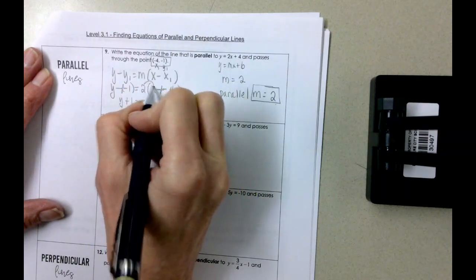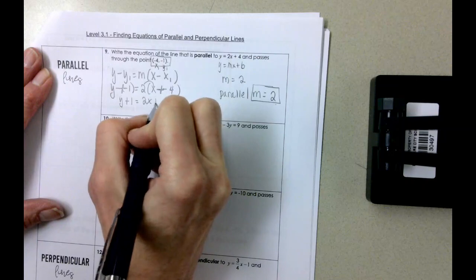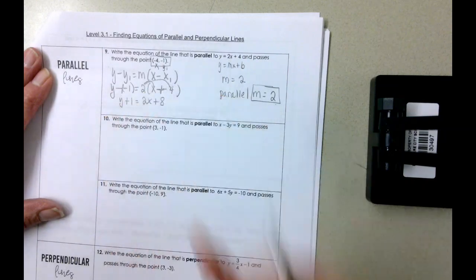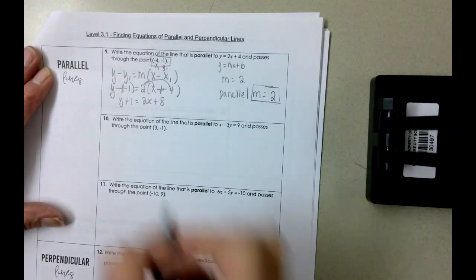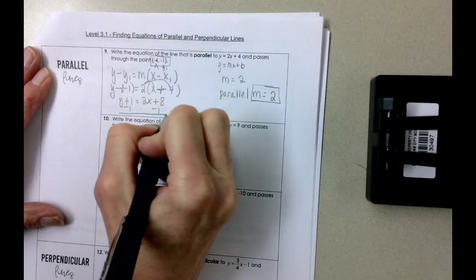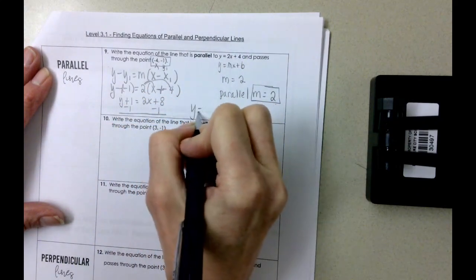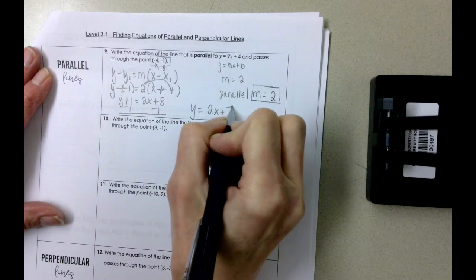And now we're going to distribute over here, so we've got y plus 1 equals 2x plus 8. And then when we finish, we can subtract 1 from both sides and we end up with y equals 2x plus 7.